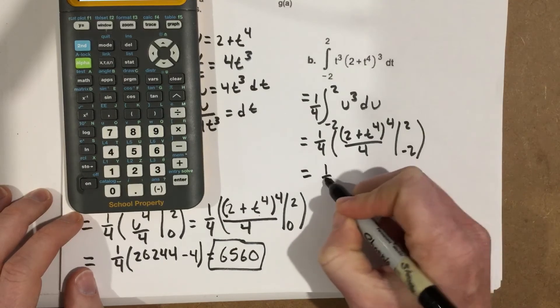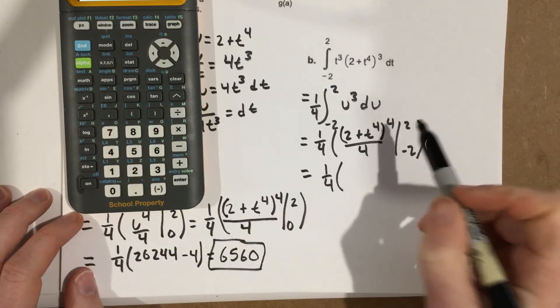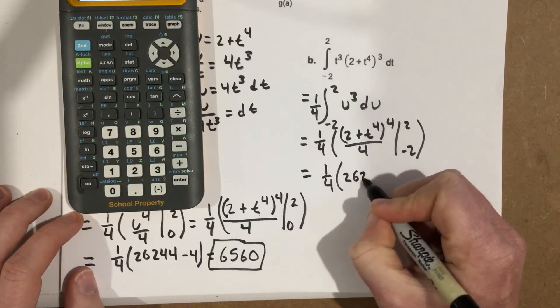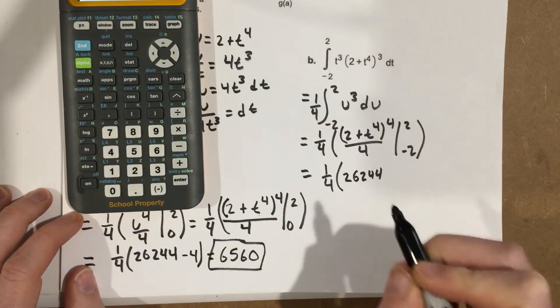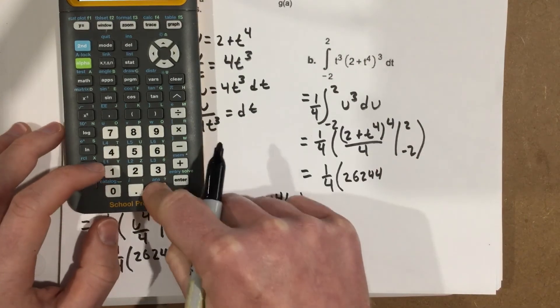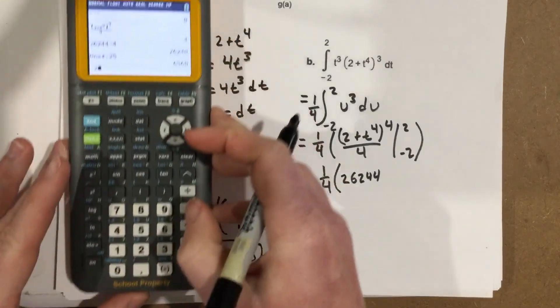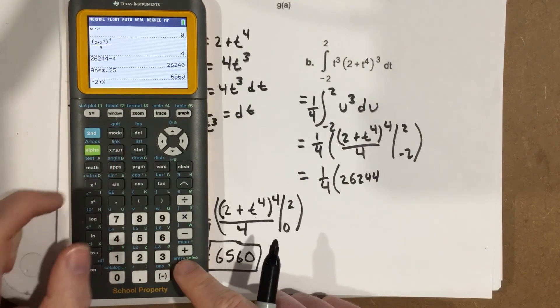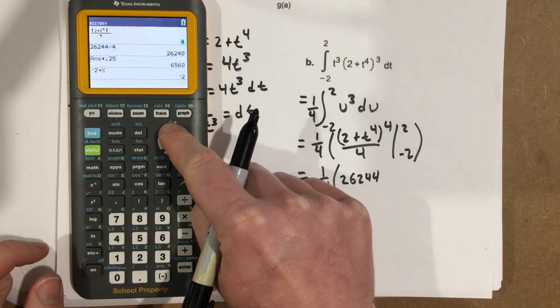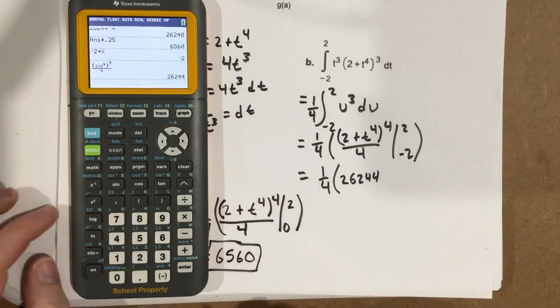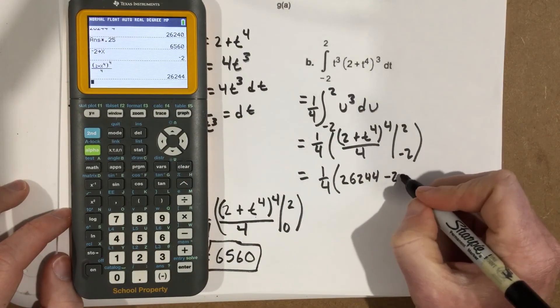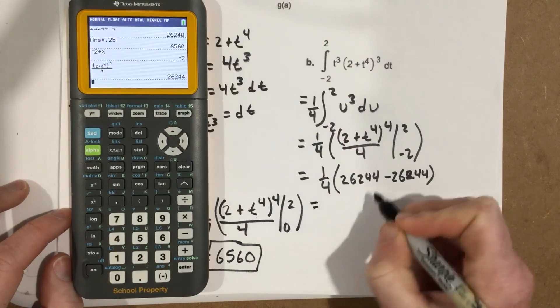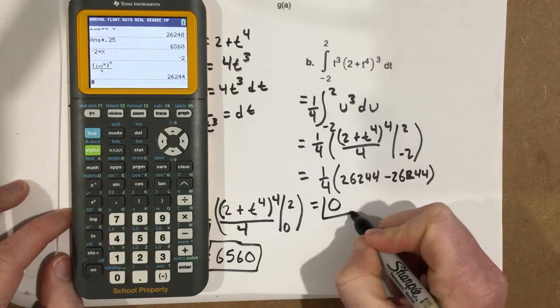Let's go ahead and plug some stuff in, 1 4th. When I plug in 2, now, I've already plugged 2 in, that was 26,244. The only number I haven't plugged in yet is negative 2. So, let's plug in negative 2, negative 2, and we're going to store this as x. Go up and grab our function. That tells us we get 26,244 for that as well, which that gives you 0, so I end up with 0 for my answer for part B.